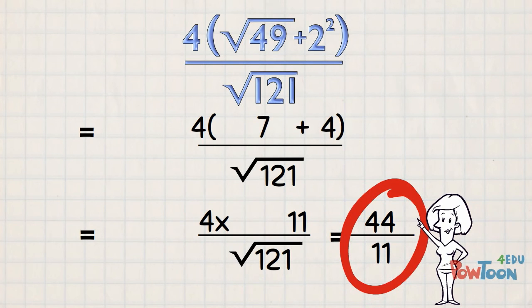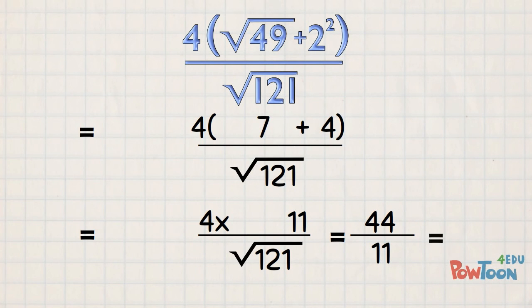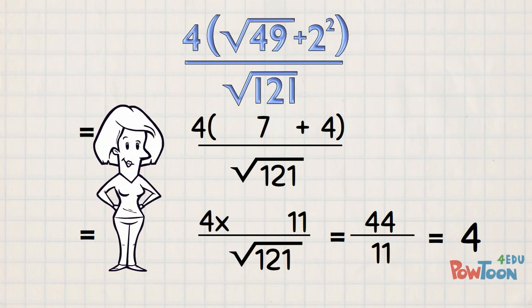And we know this means the numerator divided by the denominator. So 44 divided by 11. How many 11s in 44? 4 times 11 is 44. And we're done! That wasn't too tough at all, was it?